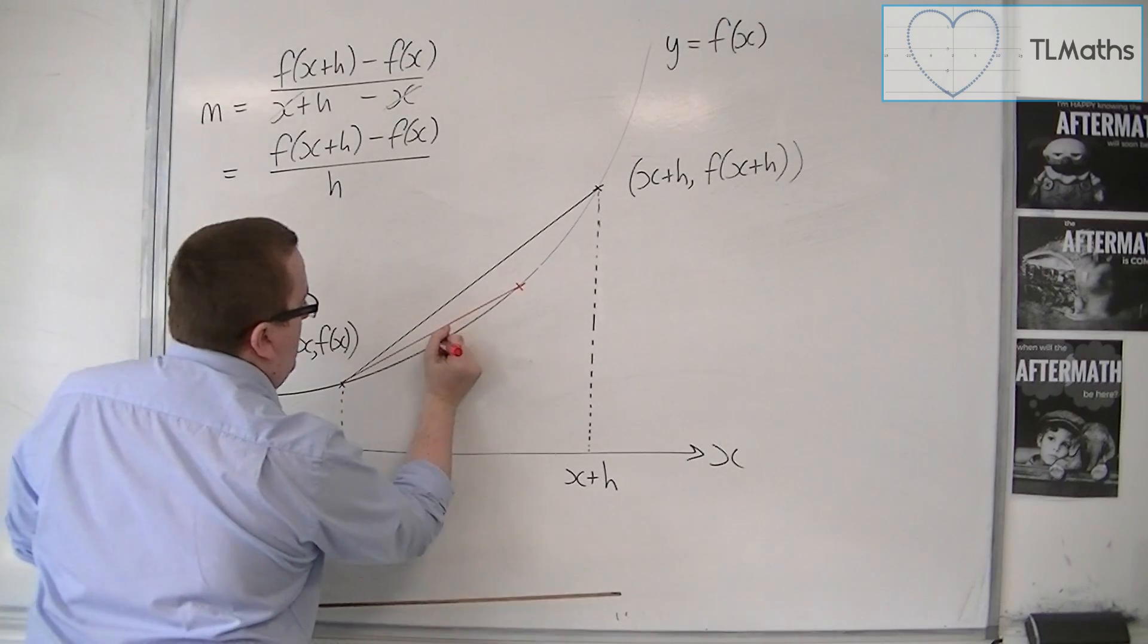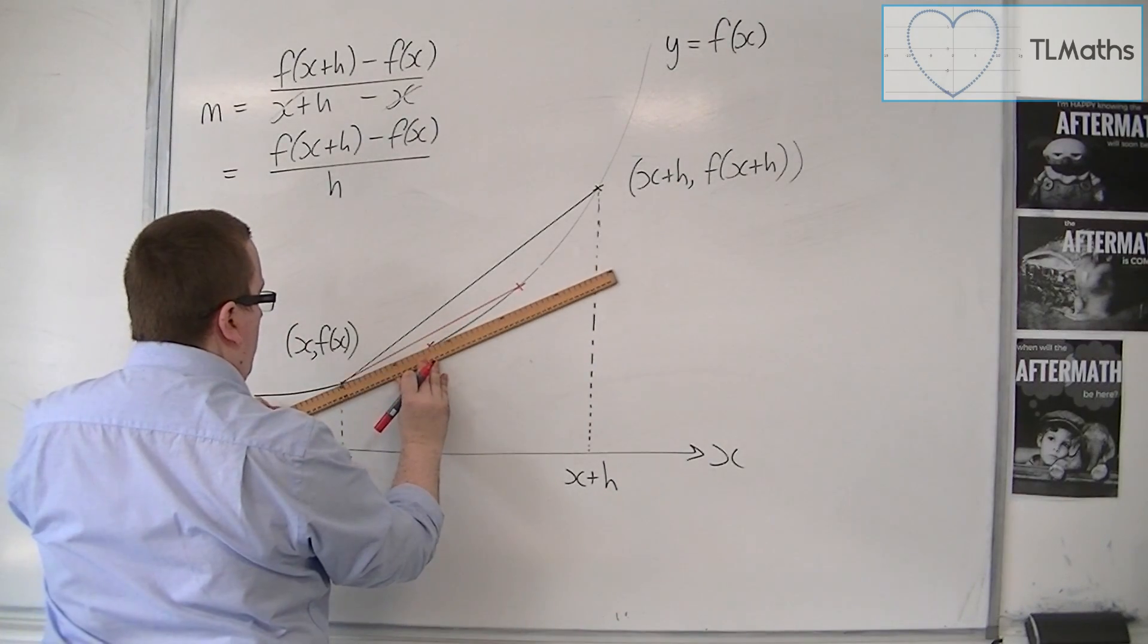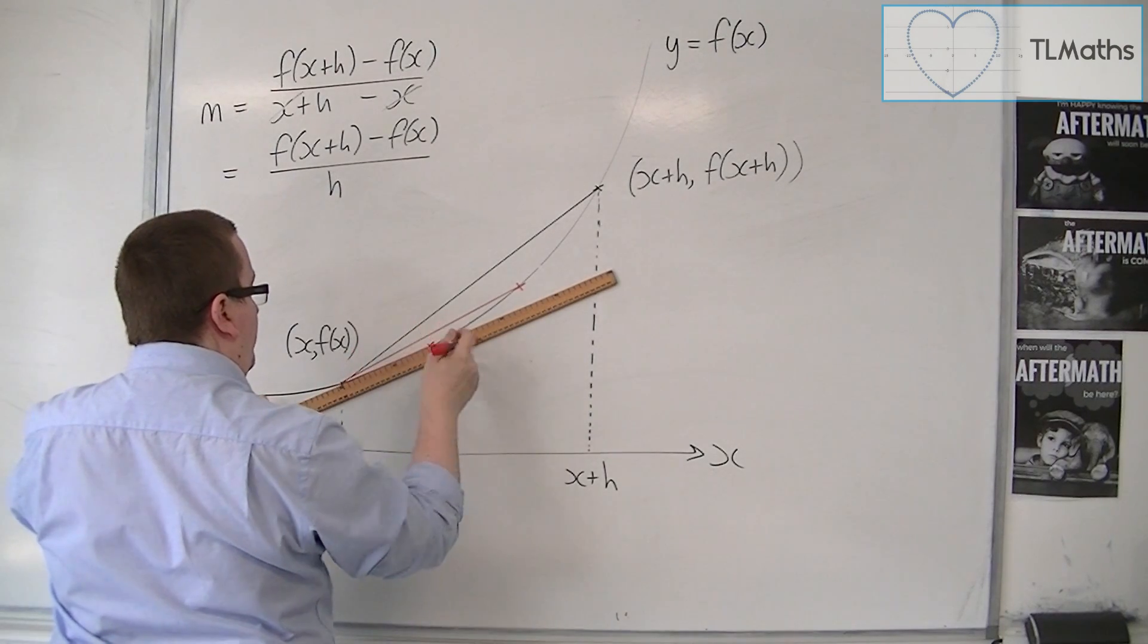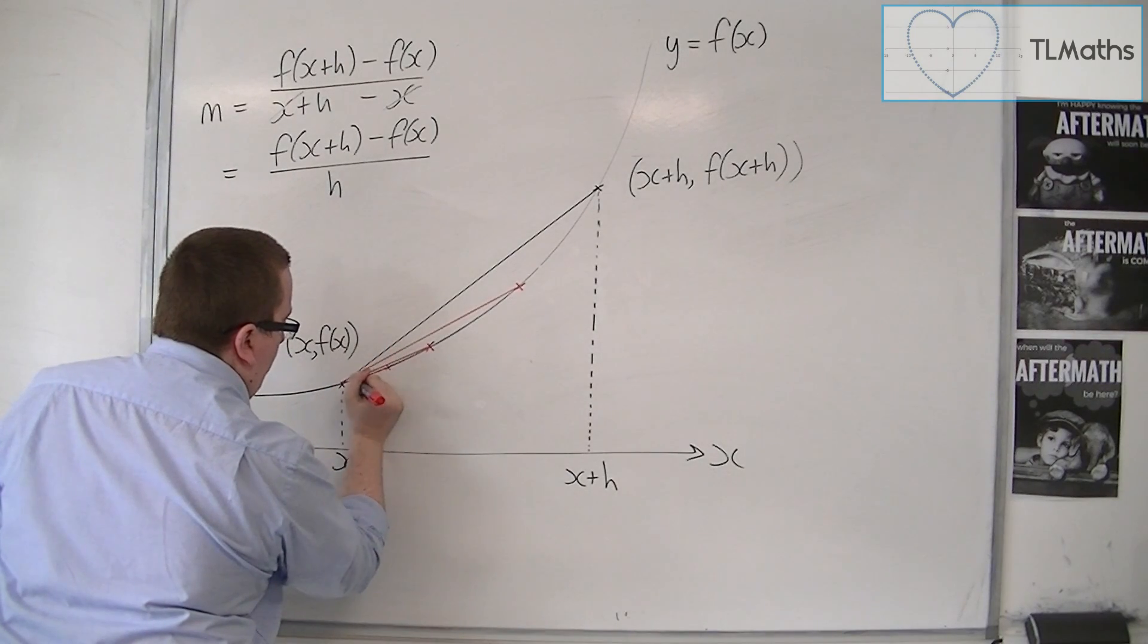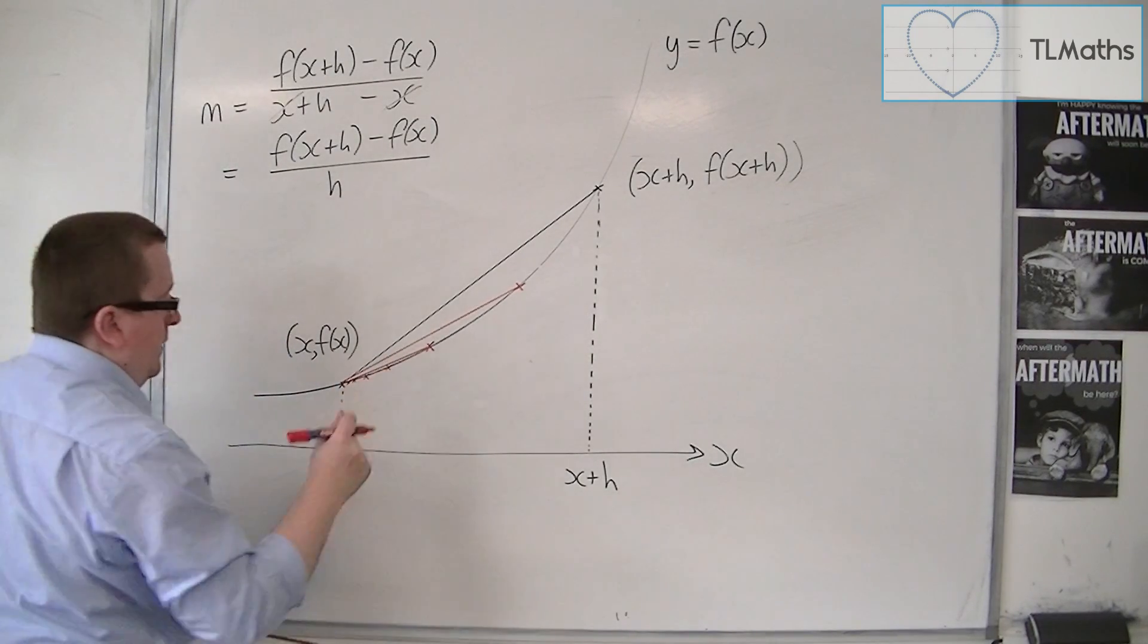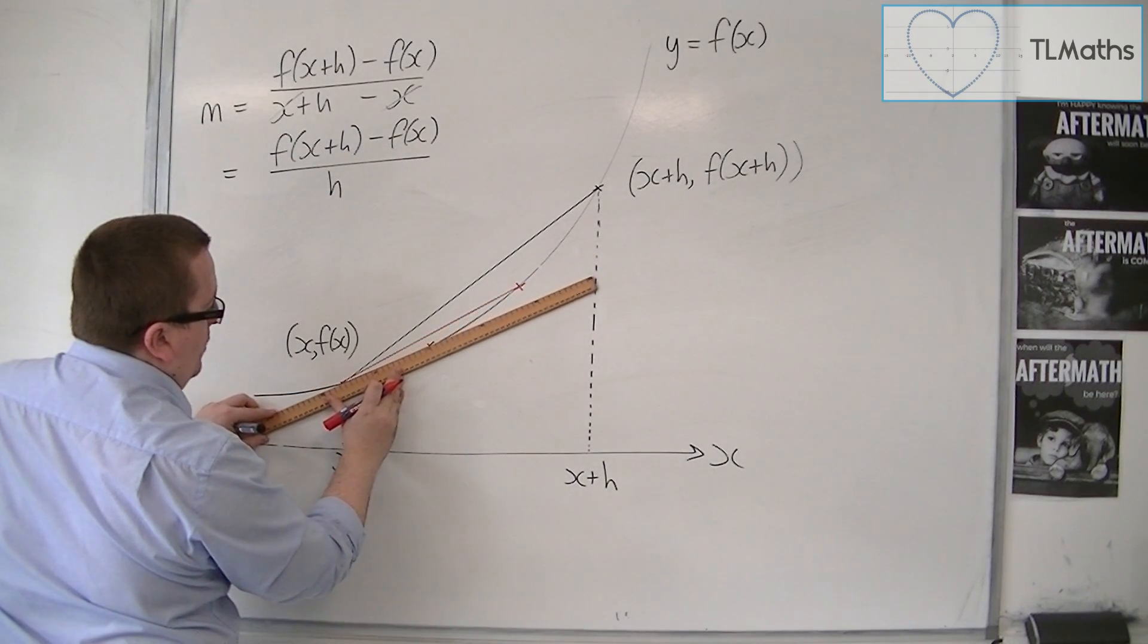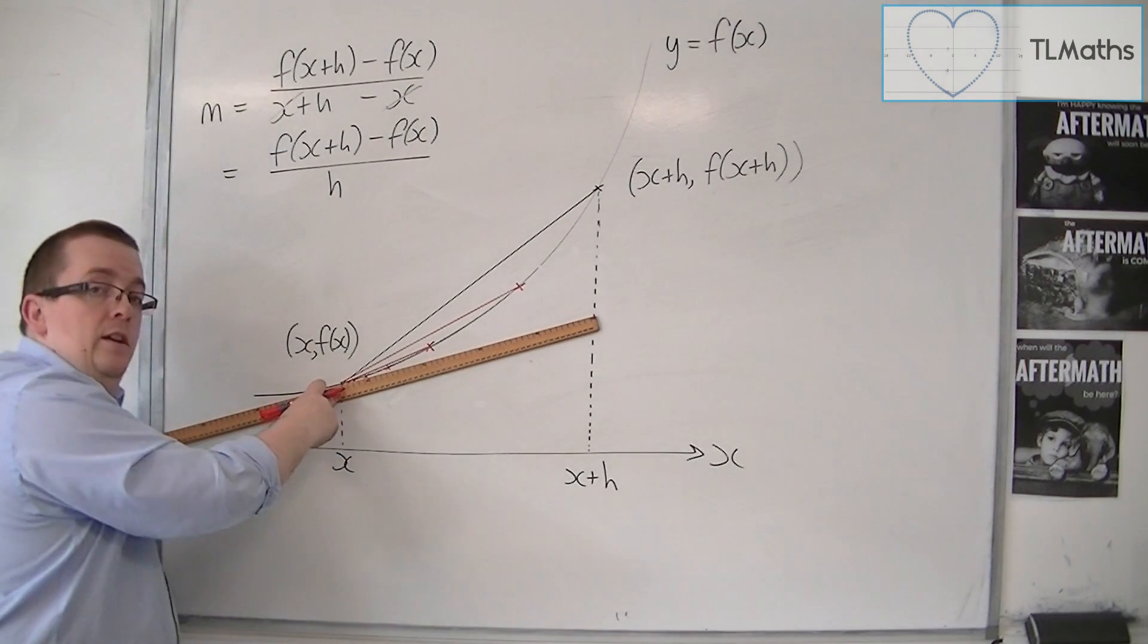So if I keep on choosing points that are closer to this point, that are closer along the curve, then as I get closer and closer and closer and closer, this chord that I've drawn will get closer and closer and closer to being the tangent line that I want.